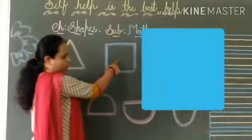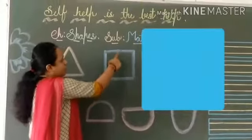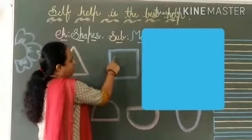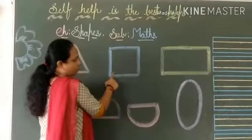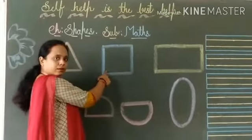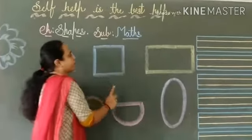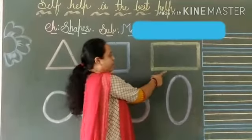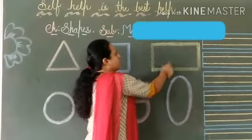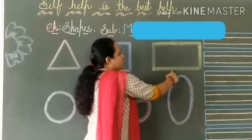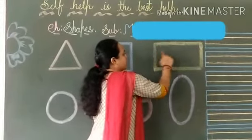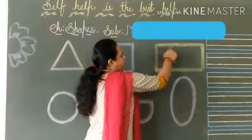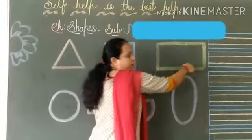Now next shape is square. A square has four equal sides and four corners. Next shape is rectangle. A rectangle has two opposite sides equal and four corners.